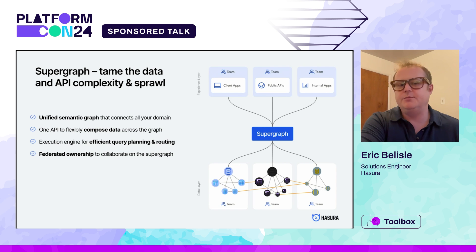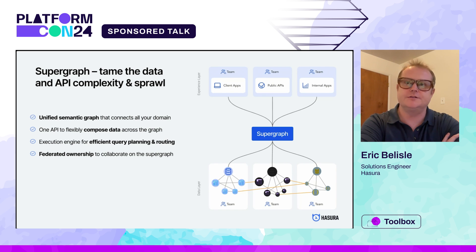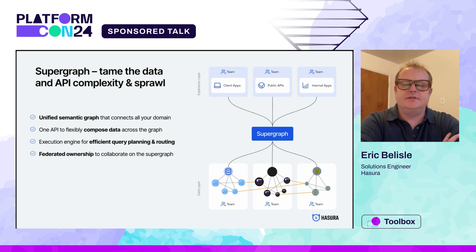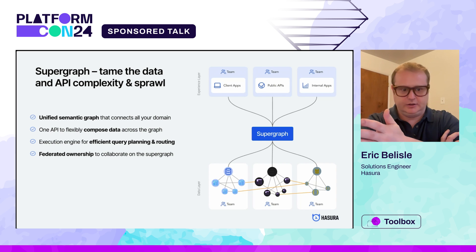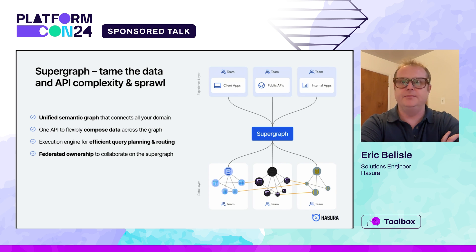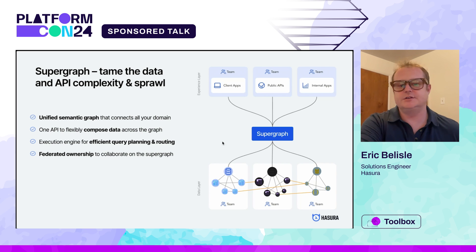What we've actually come up with is the idea of putting a SuperGraph in front of all of your microservices and data services. This allows you to not only define your API through an infrastructure as code approach, but it also gives your end users the ability to compose data across the graph. It gives you federated ownership to actually collaborate on the SuperGraph. If you notice here at the bottom of the image, we've actually created additional mappings between these different microservices that just weren't possible before without the SuperGraph layer in front of it.